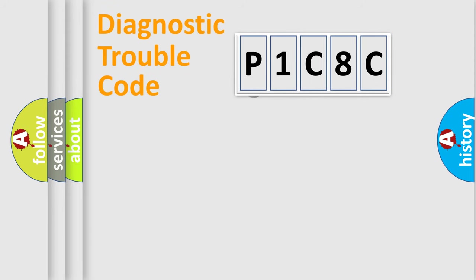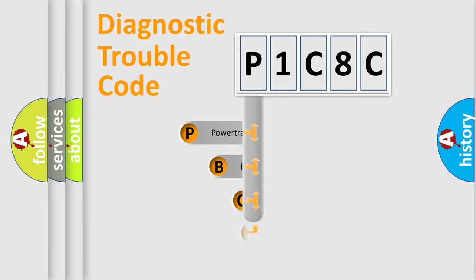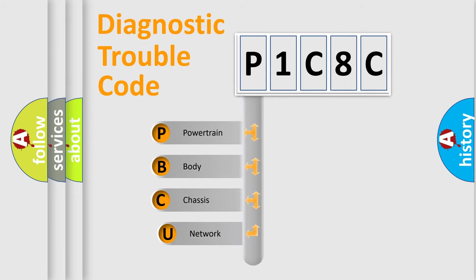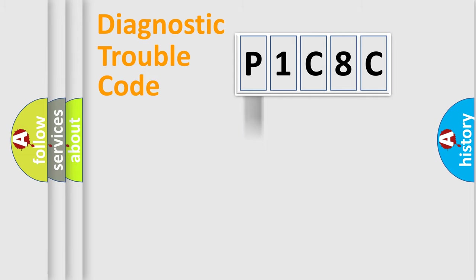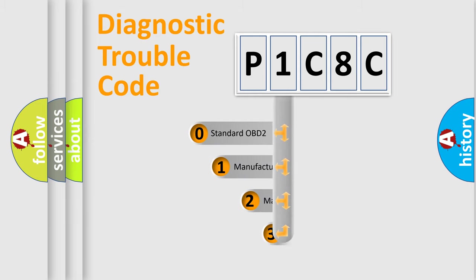First, let's look at the history of diagnostic fault code composition according to the OBD2 protocol. We divide the electric system of an automobile into four basic units: powertrain, body, chassis, and network. This distribution is defined in the first character of the code.